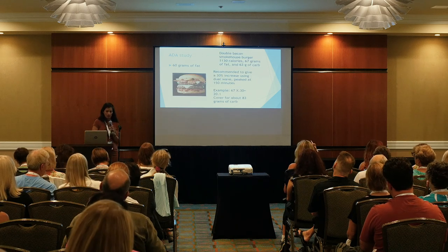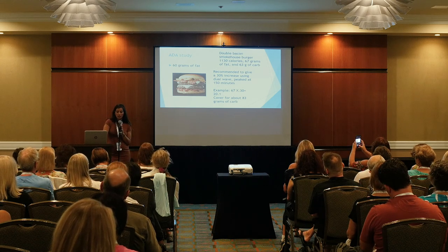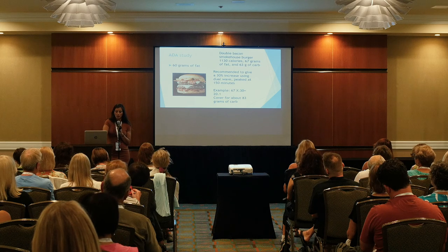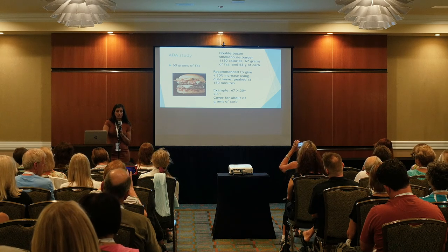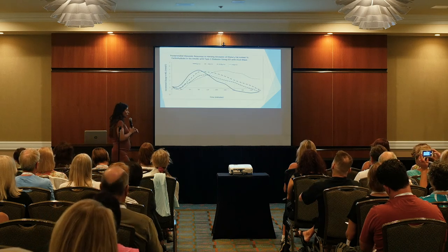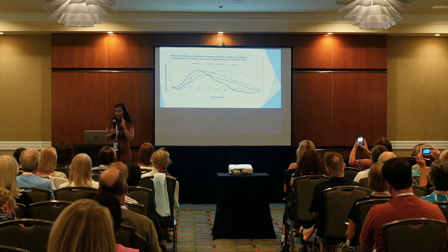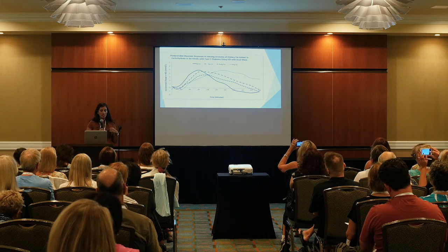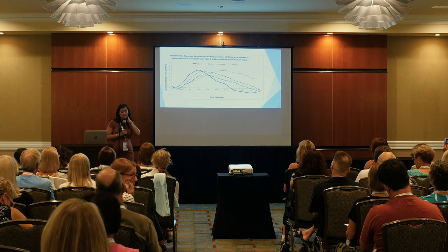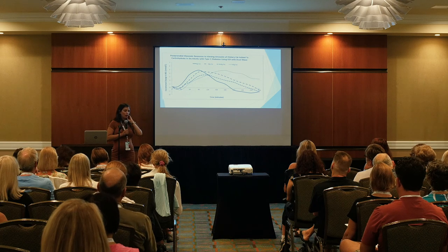For 60 grams of fat — a double smokehouse burger — a 30% increase was recommended. Take 67 grams of fat times 0.30 and cover for about 83 grams of carb total. As this photo shows, meals with 0, 20, 40, or 60 grams of fat all peak differently. The takeaway: when having something high in fat, you have to give more insulin, and the amount is different for everyone.